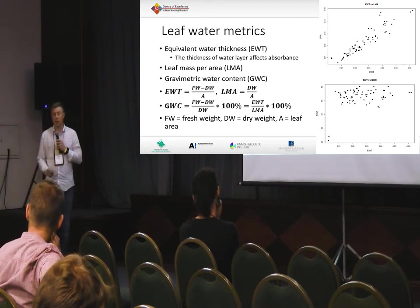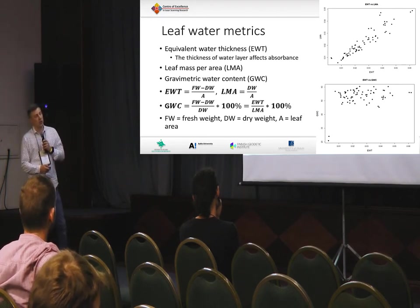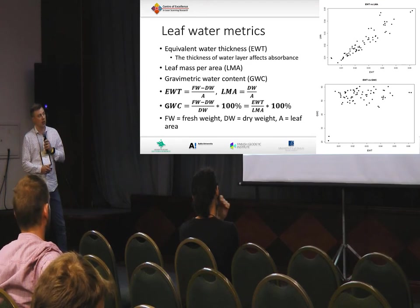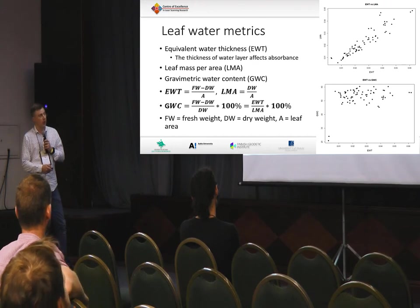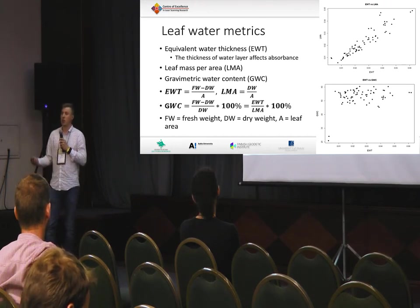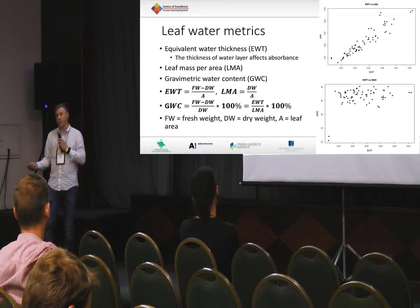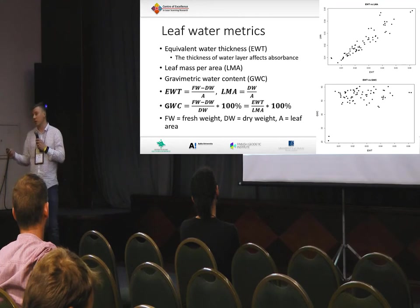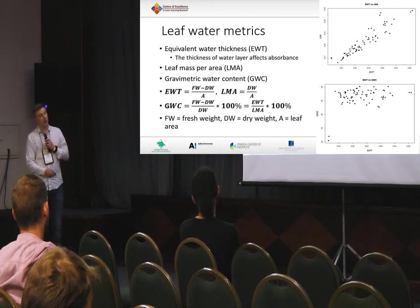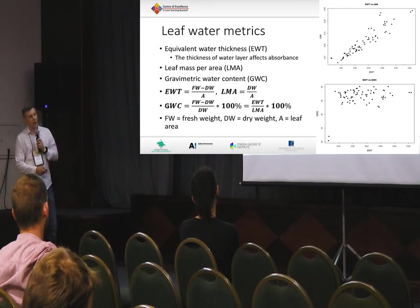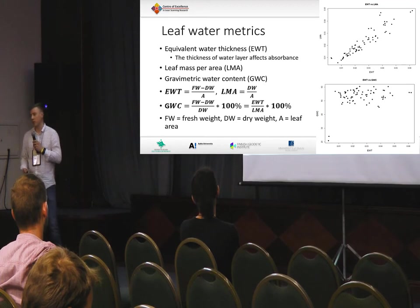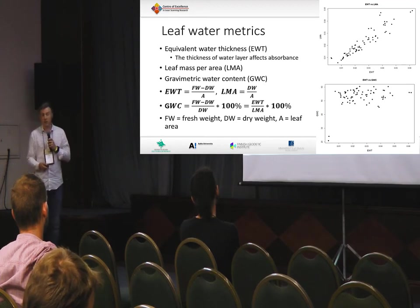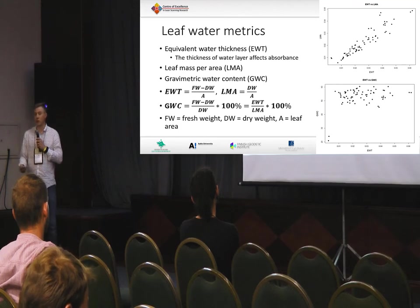This is a rather extreme example with Norway spruce — the equivalent water thickness and LMA plotted here, you can see it's very highly correlated. Relative water content, on the other hand, is the amount of water per dry weight, which is counterintuitive. But here, equivalent water thickness and relative water content show no correlation. So you have to really think about what kind of leaf water metrics you are using, because it may be that it's not telling you about the actual leaf water.